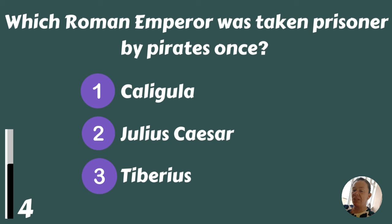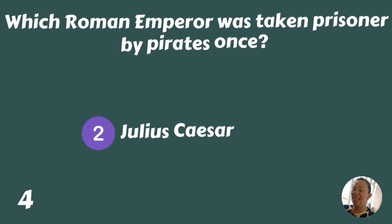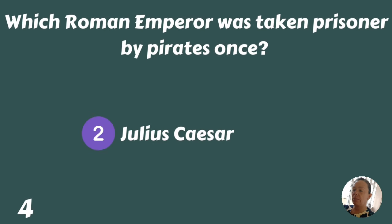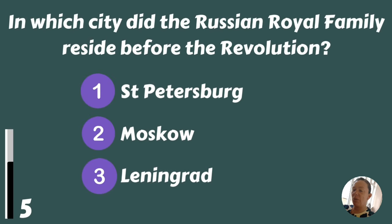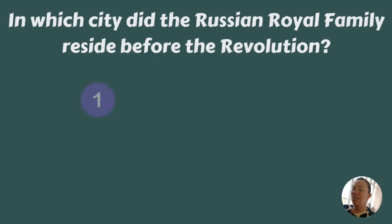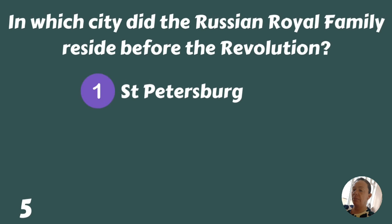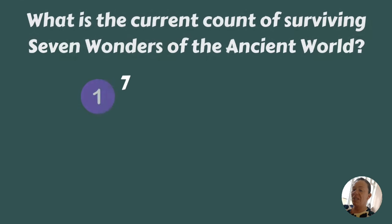Which Roman Emperor was taken prisoner by pirates once — Caligula, Julius Caesar, or Tiberius? Julius Caesar. In which city did the Russian royal family reside before the revolution — St. Petersburg, Moscow, or Leningrad? St. Petersburg.